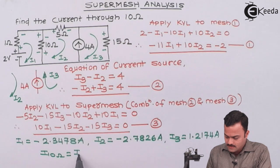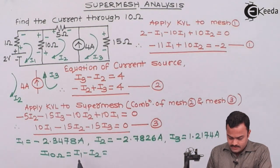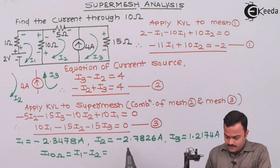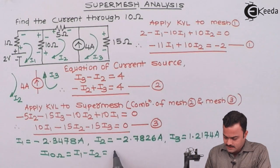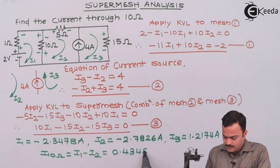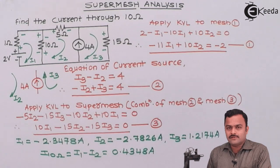Hence I_10ohm is I1 minus I2. So if I substitute the value of I1 and I2 I will get a final answer as 0.4348 ampere. Let's mark the direction also.